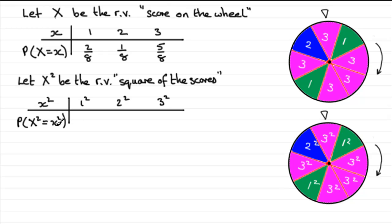Well, clearly the probabilities haven't changed from what they were up here. You've still got the same number of sectors showing 1² as you had with 1, and so on. So these probabilities stay exactly the same: 2/8, 1/8, and 5/8.